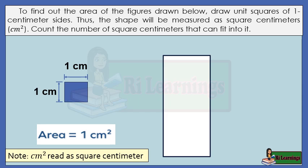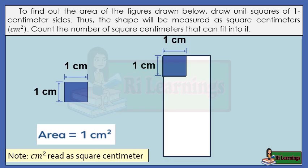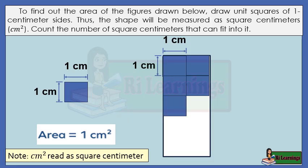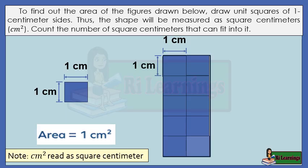How about this rectangular figure? Let's count how many squares fit into it: one, two, three, four, five, six, seven, eight, nine, ten. There are ten squares that fit inside the rectangle. The area of the rectangle is 10 square centimeters.